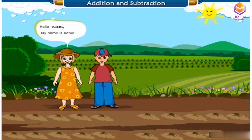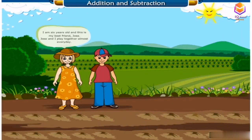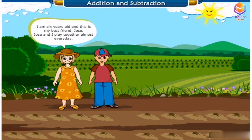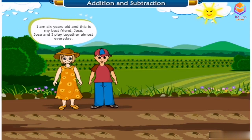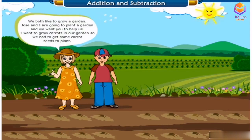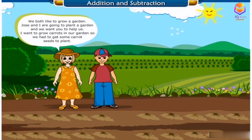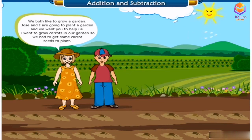Hello! My name is Annie. I am six years old and this is my best friend, Jose. Jose and I play together almost every day. We both like to grow a garden. Jose and I are going to plant a garden and we want you to help us. I want to grow carrots in our garden, so we had to get some carrot seeds to plant.